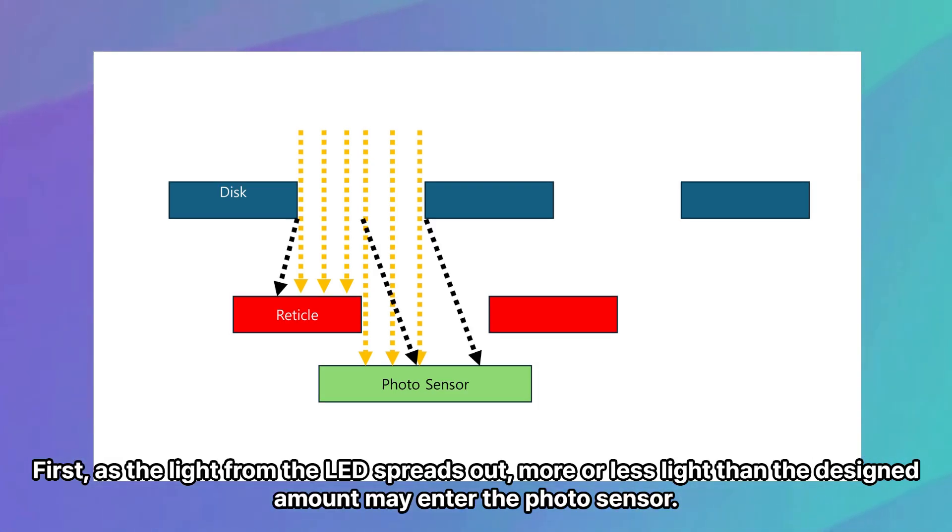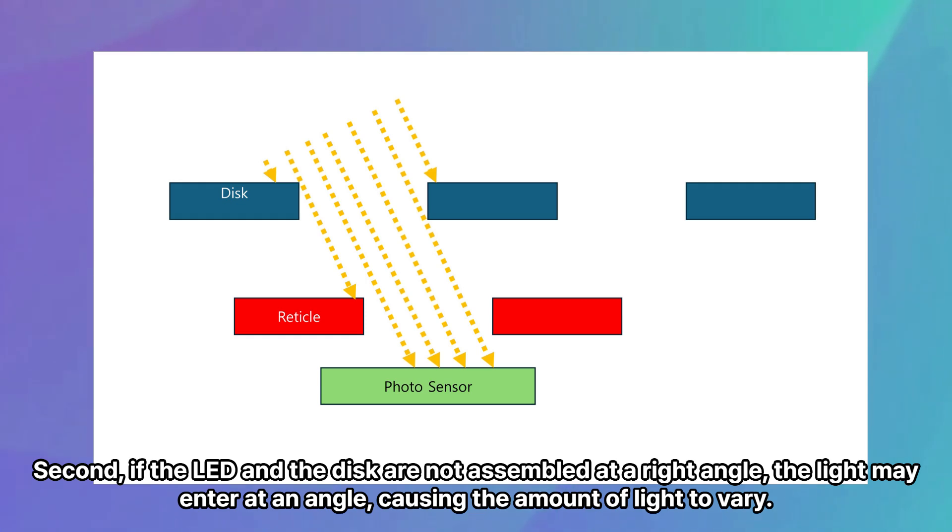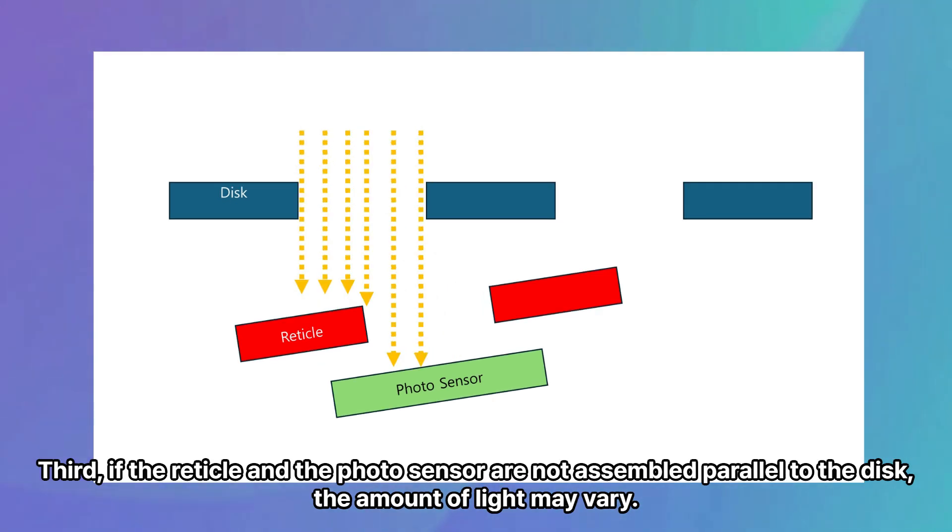First, as the light from the LED spreads out, more or less light than the designed amount may enter the photosensor. Second, if the LED and the disk are not assembled at a right angle, the light may enter at an angle, causing the amount of light to vary. Third, if the reticle and the photosensor are not assembled parallel to the disk, the amount of light may vary.